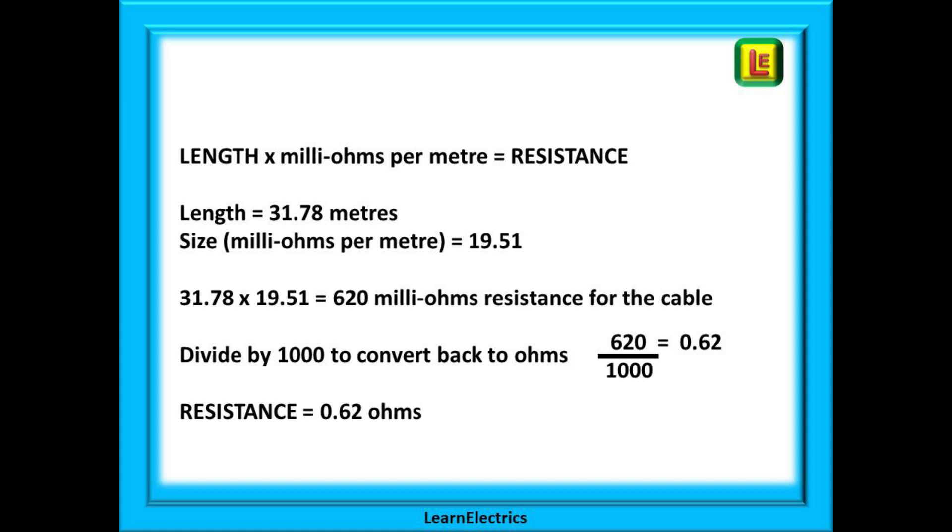We have 31.78 meters and we have 19.51 milli ohms. Multiply them together. 31.78 multiplied by 19.51 gives us 620 milli ohms. The resistance for the cable. Divide this by 1000 to convert it back to ordinary ohms and we have 0.62 ohms. And this is the number we started with just a few slides ago.